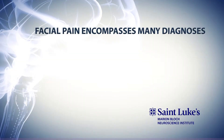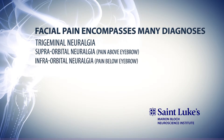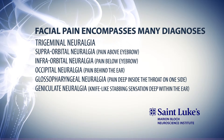For facial pain, it's only after you've reached the right diagnosis that you can offer the appropriate treatment. Facial pain is a large term that encompasses trigeminal neuralgia pain, supraorbital pain — a pain above the eyebrow — infraorbital neuralgia — pain below the eyebrow — occipital neuralgia — pain behind the ear — glossopharyngeal neuralgia — a pain deep inside the throat on one side — and geniculate neuralgia, which is a knife-like stabbing sensation deep within the ear. For all of these diagnoses, the treatments are different.